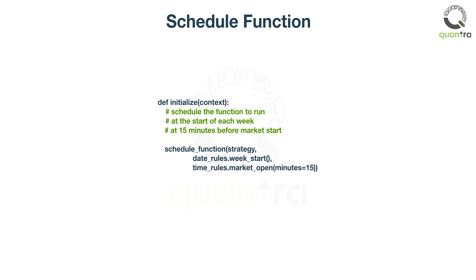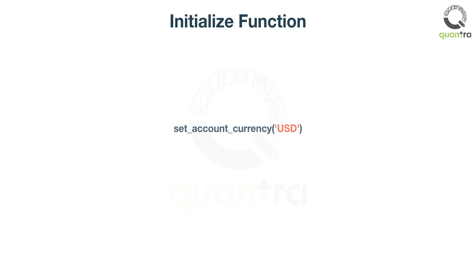The final step is to schedule the strategy function at the start of every week. This is done using the schedule_function. This code will schedule the strategy function to be called at the start of every week, 15 minutes after market open. We set the account currency to USD to convert PnL to USD at the end of the day.